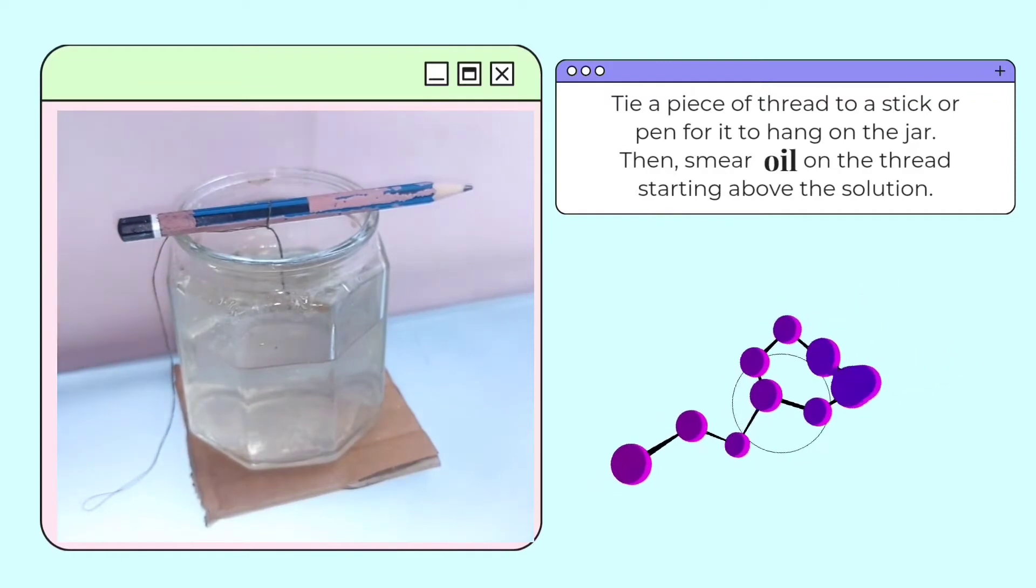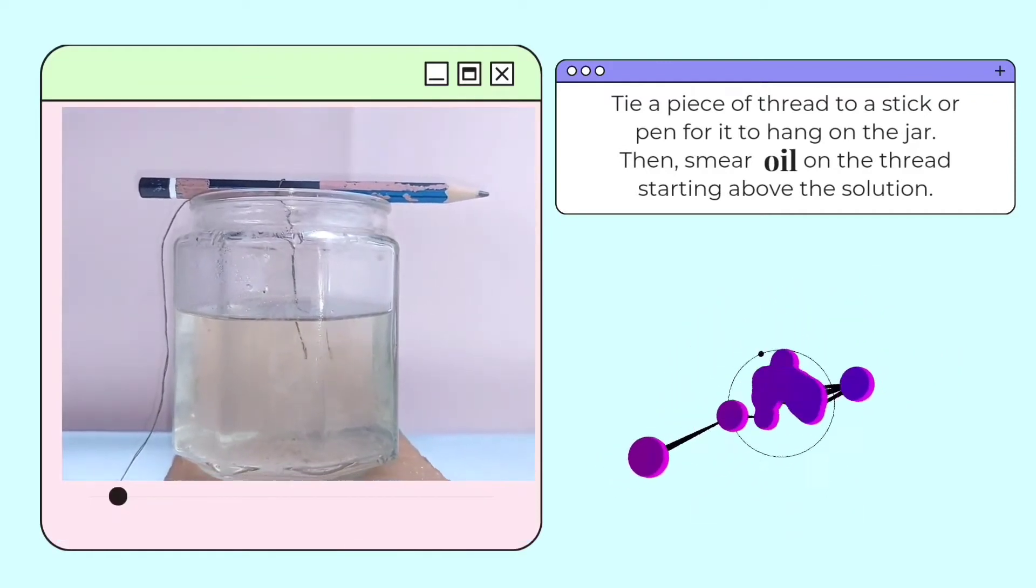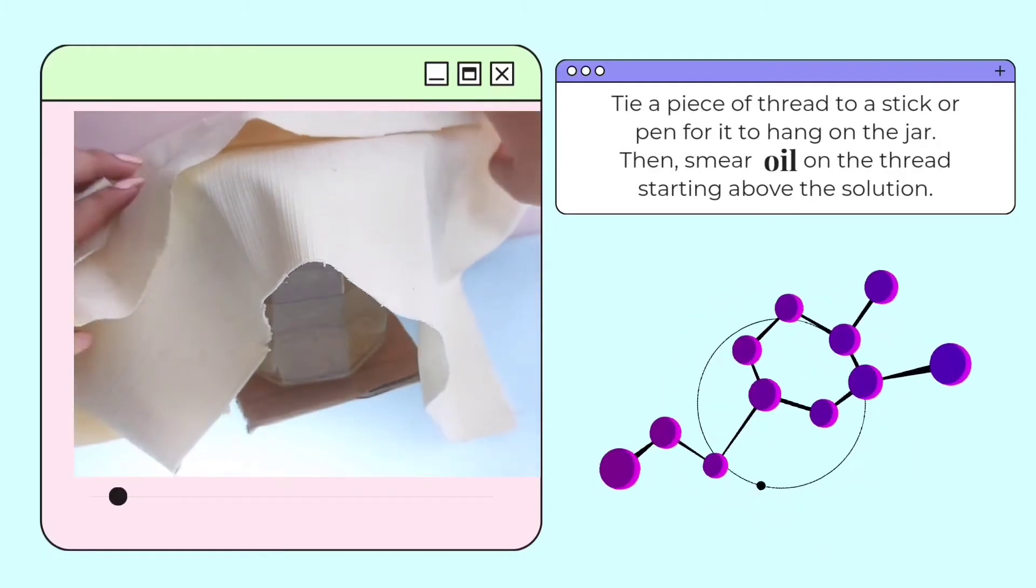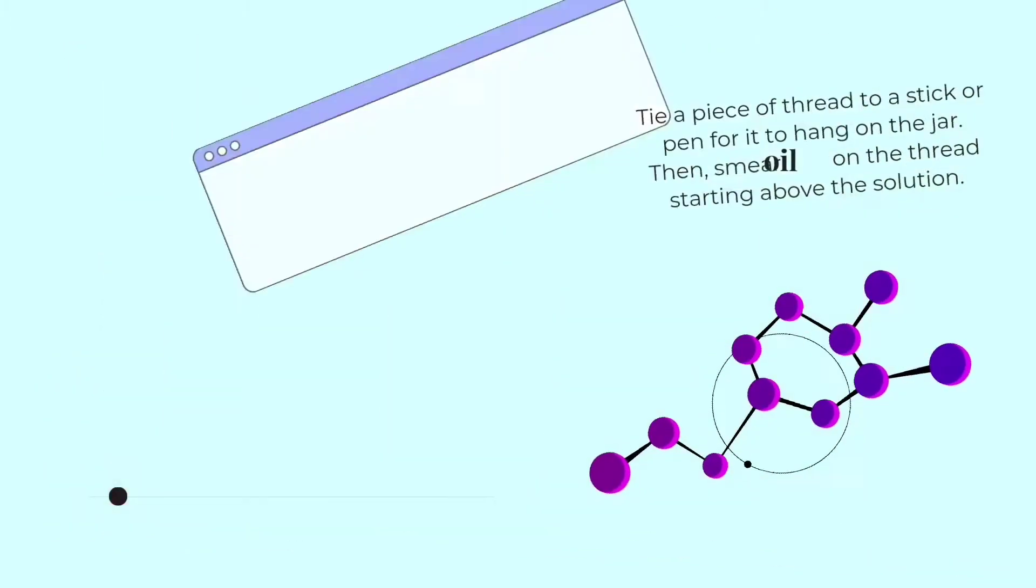Then hang it on the jar. The thread should not extend more than 1 cm below the solution. Then cover the jar with a piece of cloth or paper to leave it undisturbed.